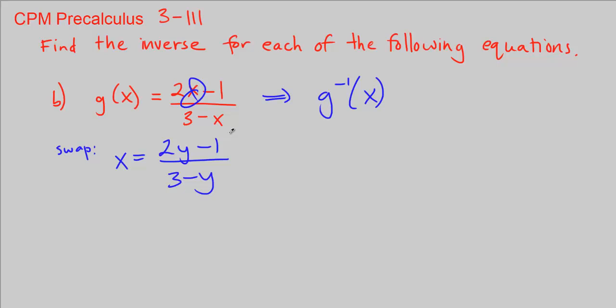Every x here becomes a y. Now we want to solve for y, so let's go ahead and multiply both sides by 3 minus y to remove it from the denominator.